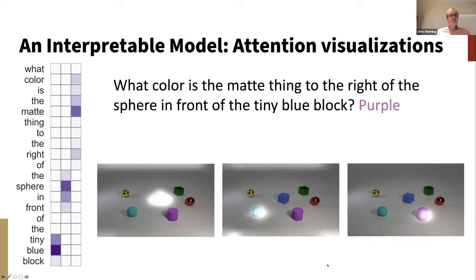You get best results from MAC by having it reason on CLEVR questions for six or eight steps, but here's an example with only three steps. At the first time step, it focuses on the tiny blue block. Then in the second step, it focuses on the sphere in front. Then in the final step, it focuses on the color of the matte thing to the right, also focusing on that matte object in the visual scene, and it correctly answers with the color purple.